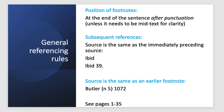Where you have previously cited a source in your paper but the reference is not the immediately preceding footnote, you cannot use 'ibid'. For example, if footnote 10 uses the same source as footnote 5, you cannot use 'ibid' because it is not immediately above. In this situation, provide the author's last name, then 'n' and the footnote number in round brackets, then a pinpoint reference to the relevant page — so 'Butler (n 5) 1072' tells us it's Butler's article fully cited in note 5 and the page reference is 1072.